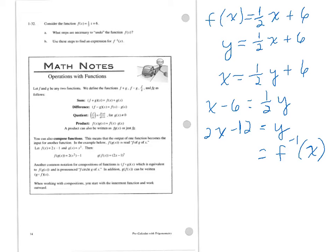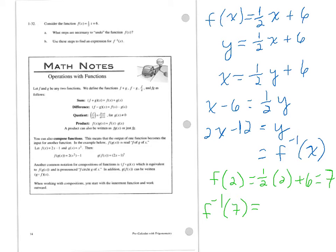I'm going to end up with 2X minus 12 is equal to Y. This is equal to the inverse of our original function. To prove that this is true: if I plug the number 2 into the original function, F of 2 equals one-half of 2 plus 6, which equals 7. So now I should be able to take that 7, plug it into the inverse function, and get out 2. The inverse gives me 2 times 7 minus 12, so 14 minus 12, which equals 2. So plugging 7 into the inverse led us back to where we started — the number 2.